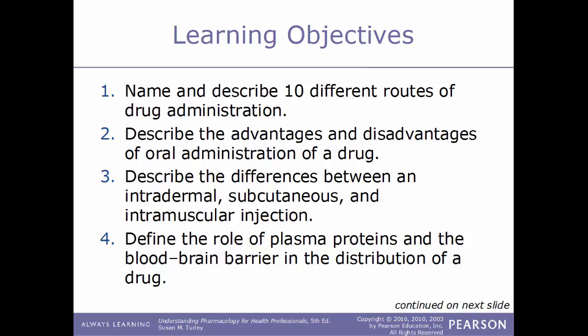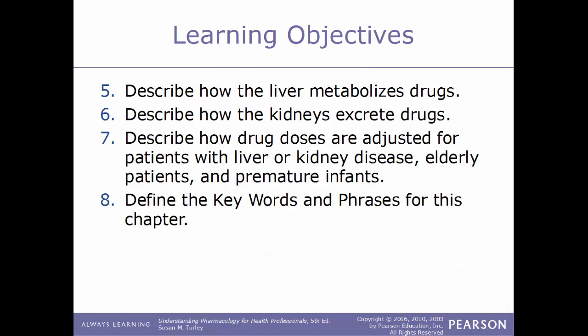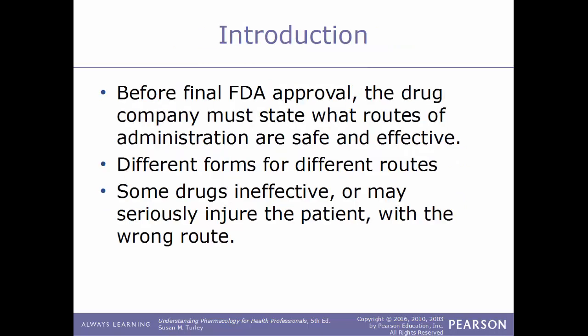subcutaneous, and intramuscular injection. Define the role of plasma proteins and the blood-brain barrier in the distribution of a drug. Describe how the liver metabolizes drugs. Describe how the kidneys excrete drugs. Describe how drug doses are adjusted for patients with liver or kidney disease, elderly patients, or premature infants. And lastly, define the keywords and phrases for this chapter.